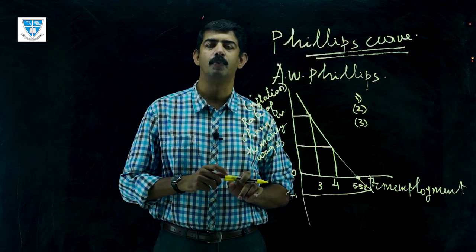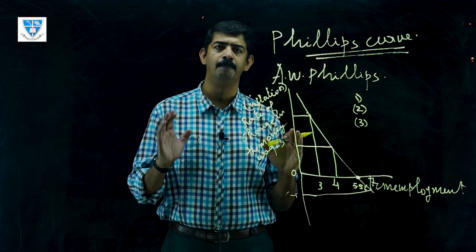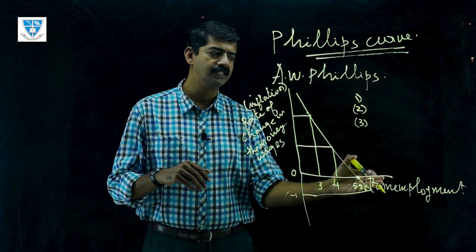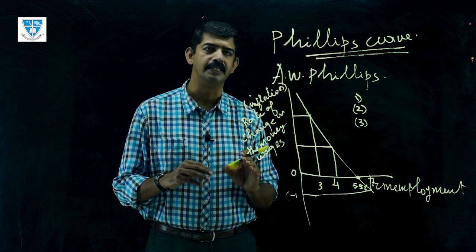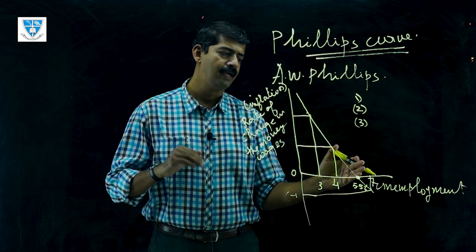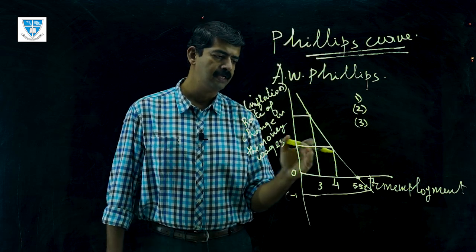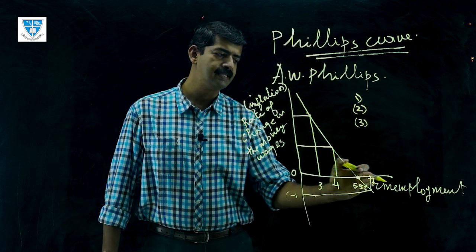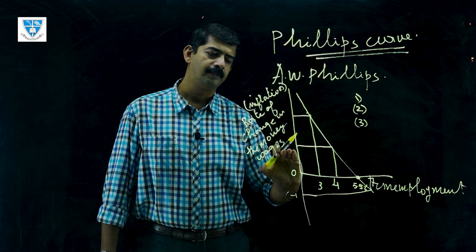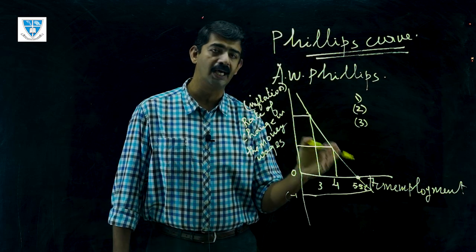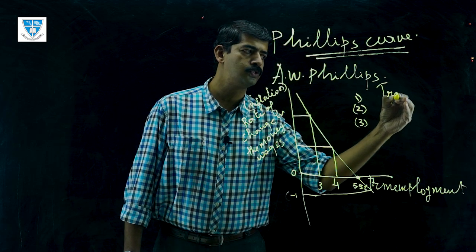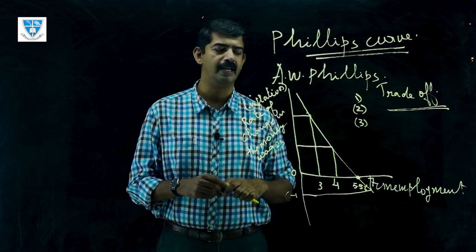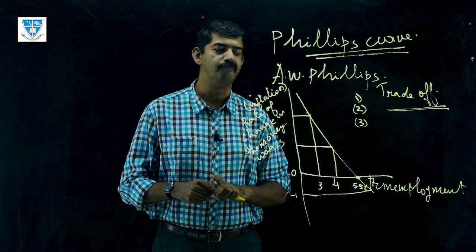In conclusion, the Phillips Curve simply explains the inverse relationship between unemployment and inflation in the economy — or in other words, the inverse relationship between unemployment and the rate of change in money wages. We can also describe it as a trade-off between inflation and unemployment: if you reduce unemployment, inflation increases; if you increase unemployment, inflation falls. So the Phillips Curve explains this trade-off between inflation and unemployment.